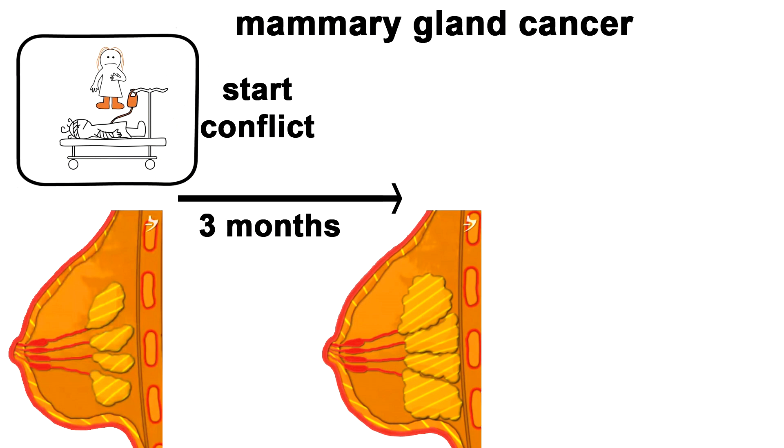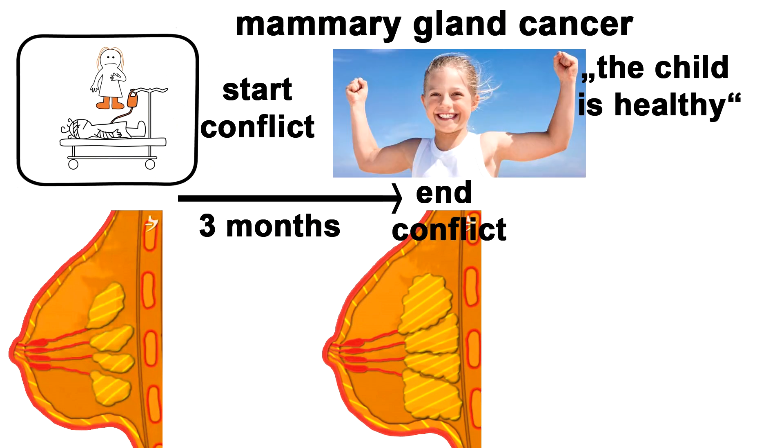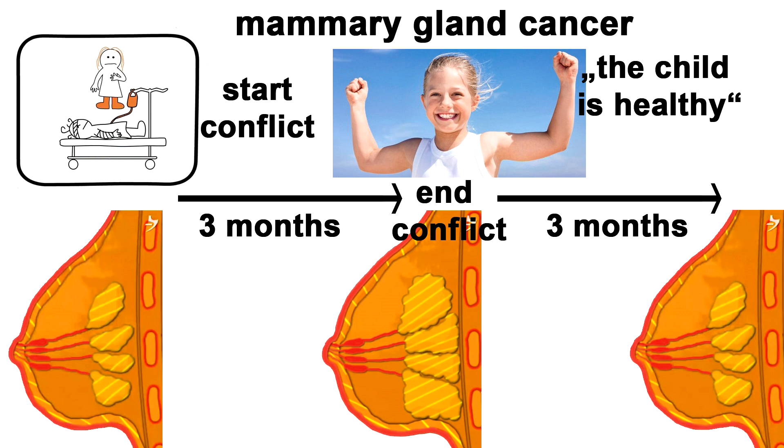The following is very important. If the mother is worried about her child, for example for three months, then for three months grows a tumor in the mammary gland. However, if the conflict is resolved, for example if the doctor informs the mother that the child is healthy again, then the cancer would go down. In this case, it would take three months for the mammary gland to return to normal size. After the mother has resolved her conflict, the tumor is decomposed by bacteria.